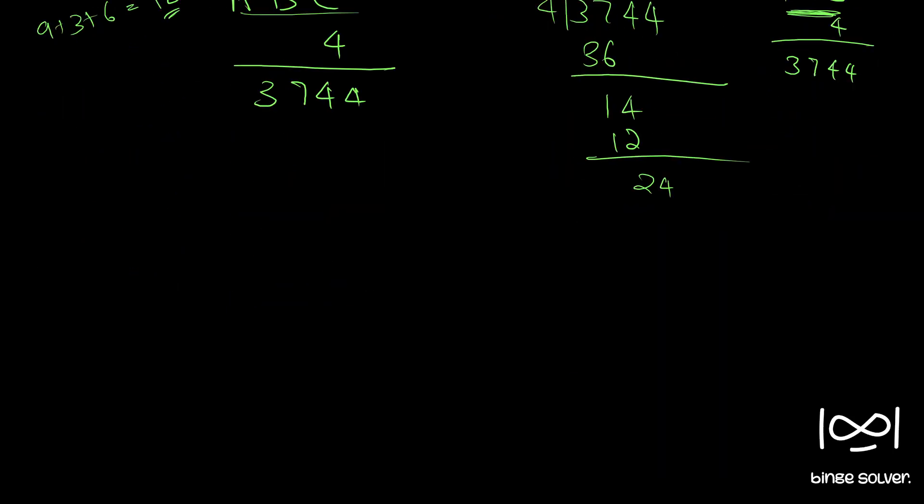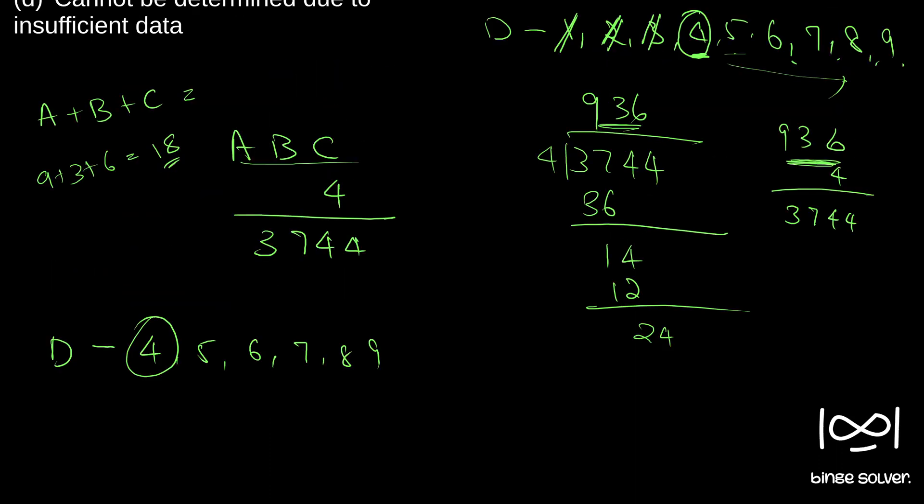We have already ruled out 1, 2, 3. We have checked 4. Now what is left is these values. So we have already found A, B, C for value 4, which we get the sum as 18. Now we will check 5.